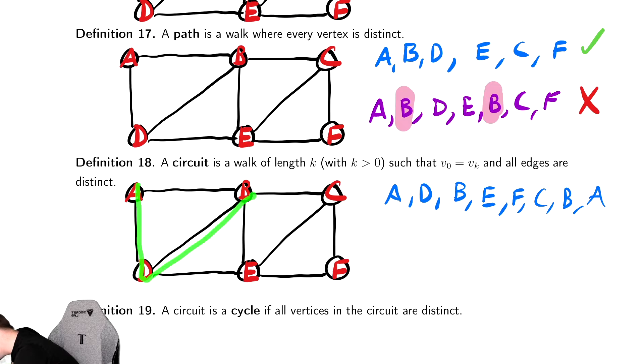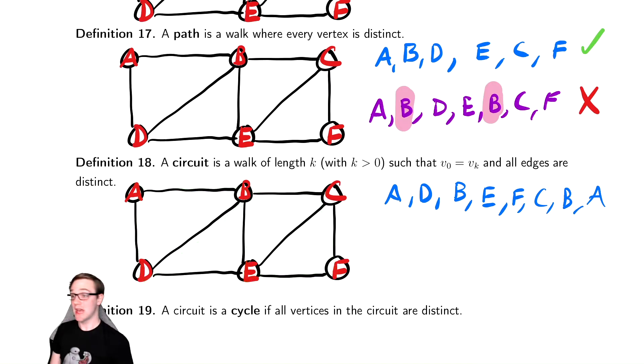We go A, D, B, E, F, C, B, A. We've revisited a vertex, but we haven't reused edges. The important thing here is that the edges are distinct in a circuit.